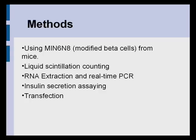In order to determine the roles of PLD1 and beta-2 in insulin secretion, multiple techniques were used, such as liquid scintillation counting and polymerase chain reaction. Each experiment was repeated at least three to five times in order to produce a more reliable result.